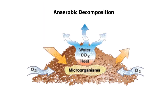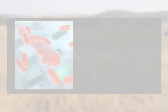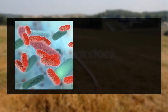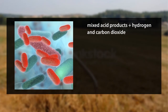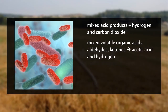Anaerobic decomposition occurs in two distinct phases. When all of the entrained oxygen is depleted from the waste, the waste decomposition changes from aerobic to anaerobic, and two new groups of bacteria emerge which thrive in anaerobic environments. Facultative microbes convert the simple monomers into mixed acid products, along with hydrogen and carbon dioxide. Anaerobic bacteria convert the mixed volatile organic acids, aldehydes, and ketones into primarily acetic acid and hydrogen.